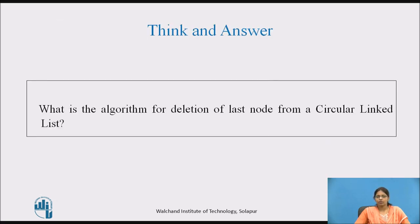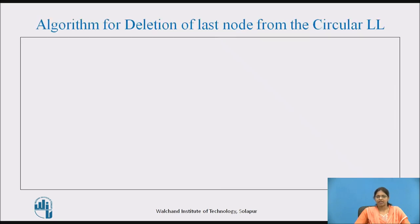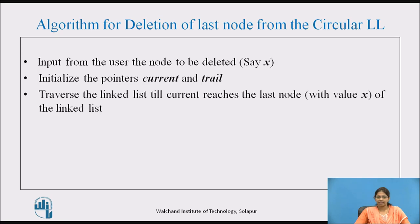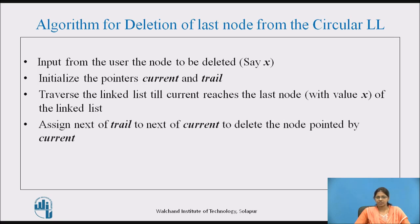Try to think: what is the algorithm for deletion of the last node from the circular linked list? Pause the video and note down the answer. Algorithm: Input from the user the node to be deleted, say x. Initialize the pointers current and trail. Traverse the linked list until current reaches the last node with value x. Assign next of trail to next of current to delete the node pointed by current.